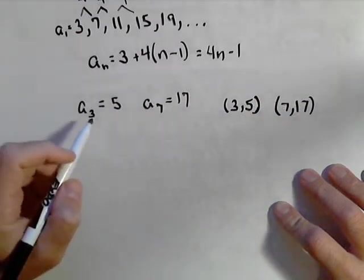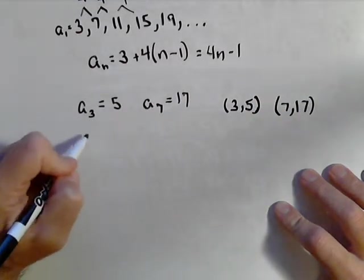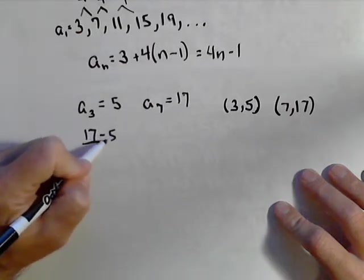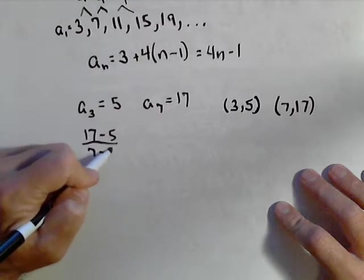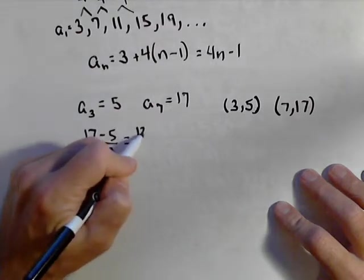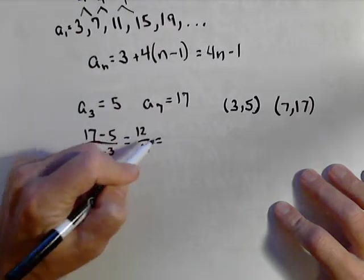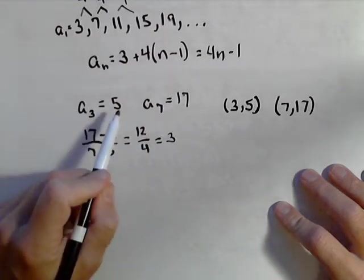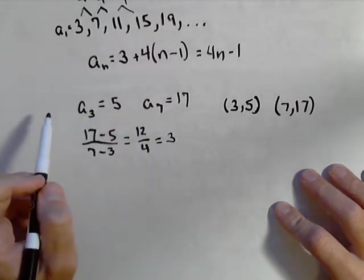This common difference that I'm talking about is really just slope. So we can do 17 minus five over seven minus three, which is 12 over four, or three. So we have a common difference of three. That means it goes up three each time, or down three each time.